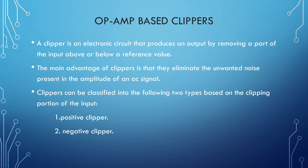An op-amp based clipper is an electronic circuit that produces an output by removing a part of the input above or below a reference value. The output of the clipper will be the same as the input for other than the clipped part — that is, the part that has been cut. Due to this, the peak-to-peak amplitude of the output will always be less than that of the input. The main advantage of clippers is that they eliminate unwanted noise present in the signal. Clippers are classified into two types: positive and negative clippers.